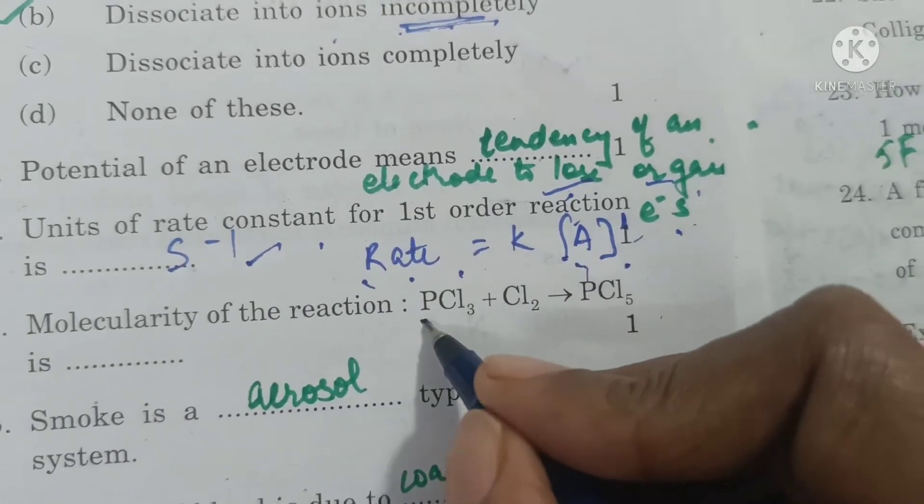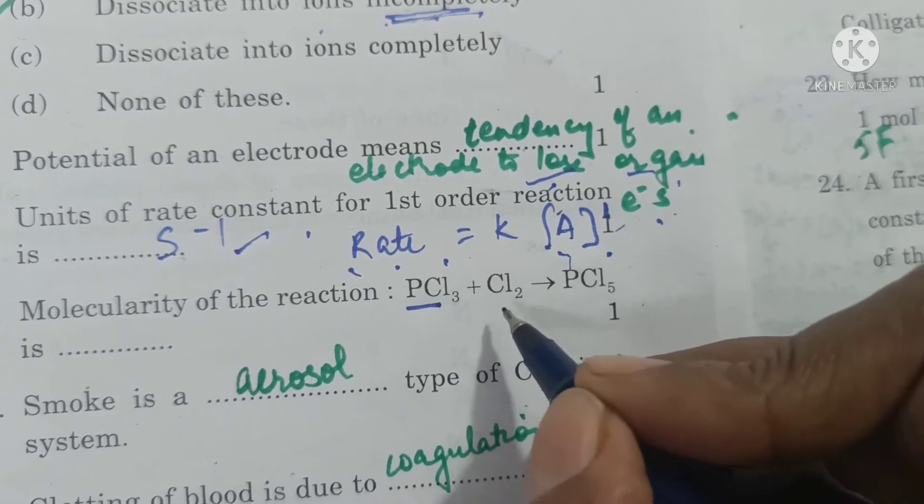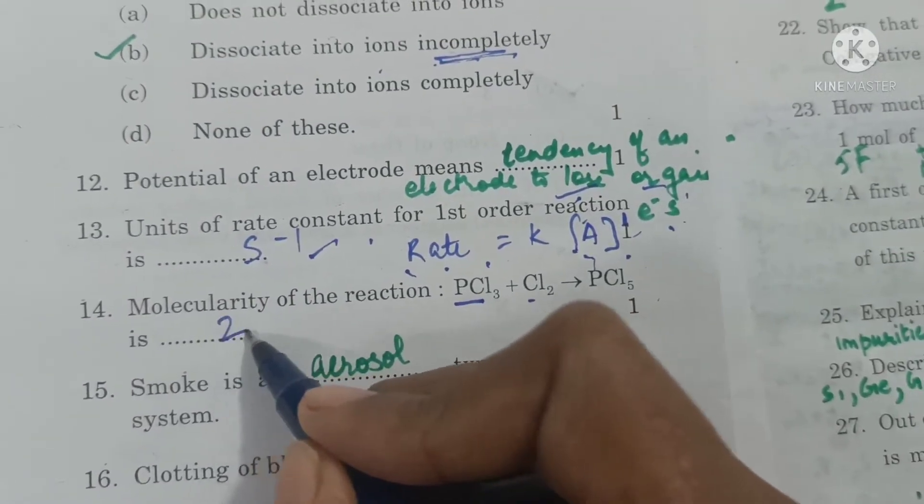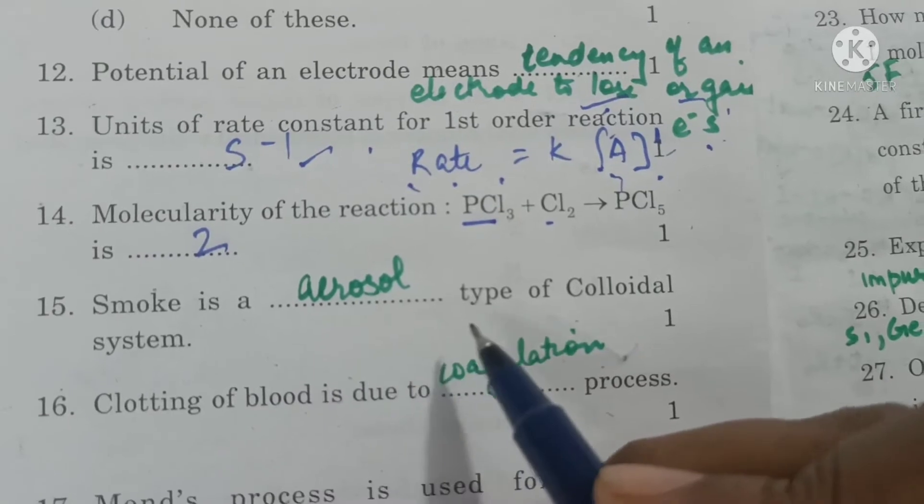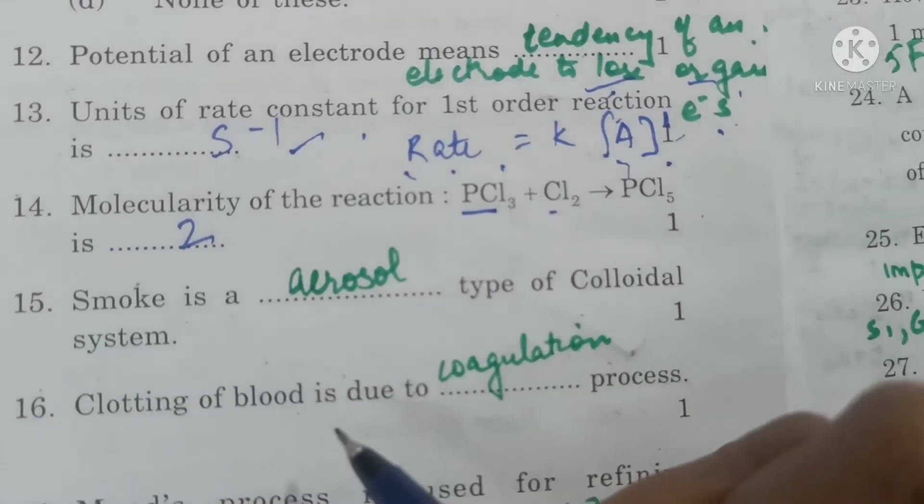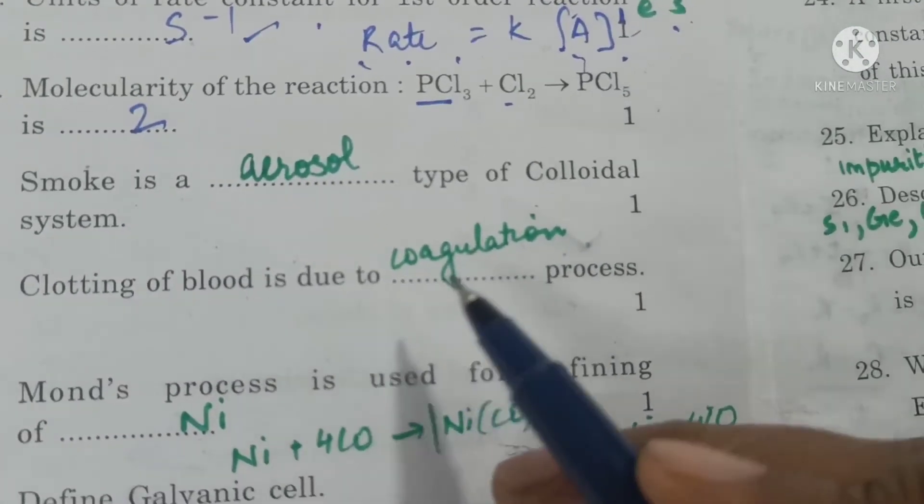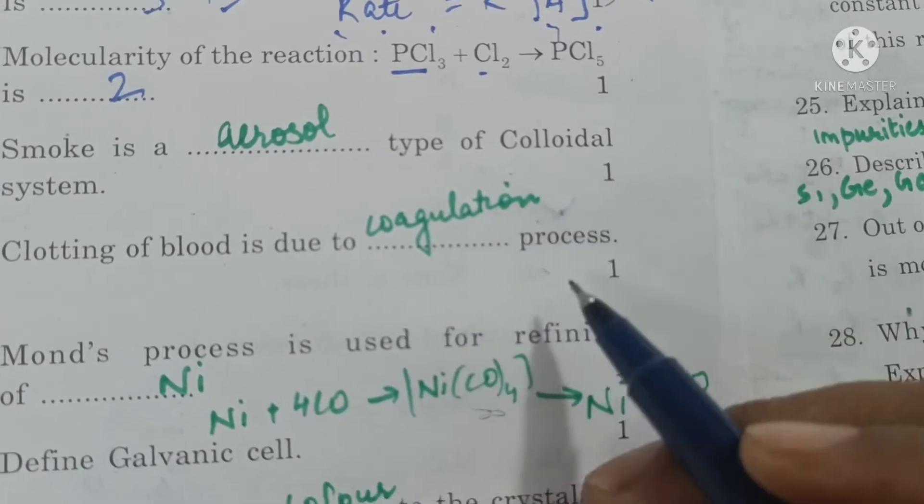Molecularity of the reaction will be 1 plus 1 equals 2. Smoke is aerosol type of colloidal system. Clotting of blood is due to coagulation process.